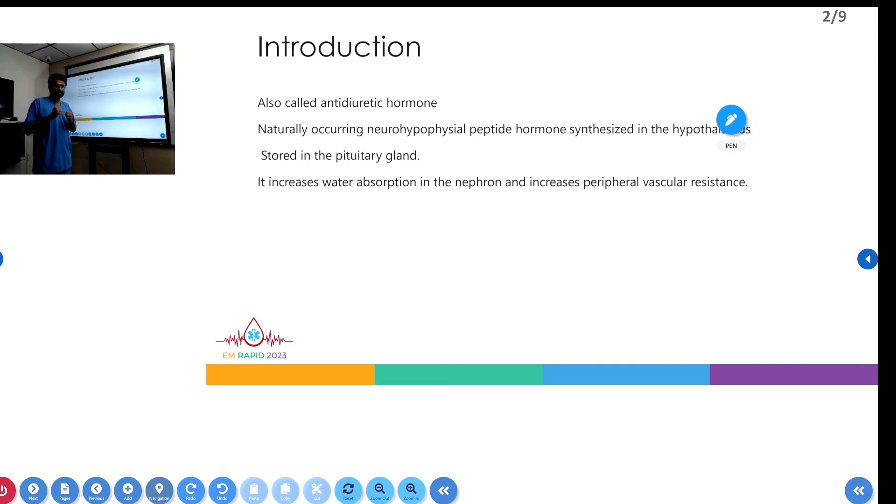The main function of ADH is that it increases water absorption in the nephron and increases peripheral vascular resistance, which helps to improve blood pressure.